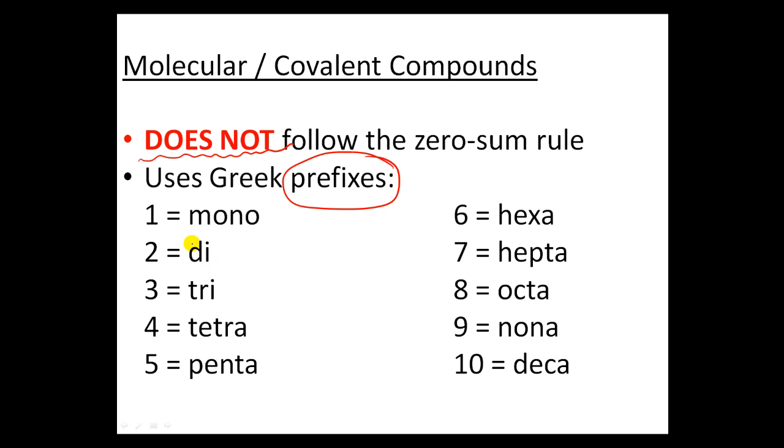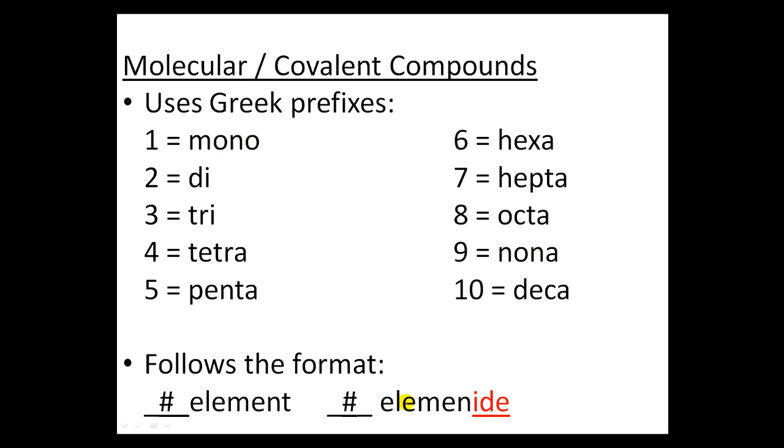The only weird ones may be the one, the two, the seven. For those who are French, a lot of French people write down septa, but it's actually hepta. And then nona and deca.